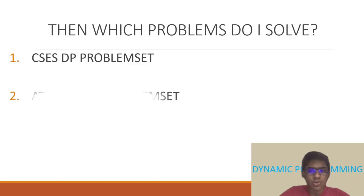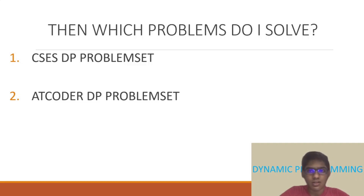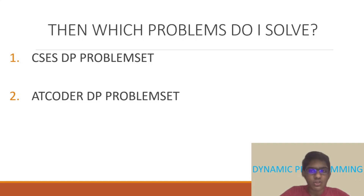Secondly, you should check out AtCoder's DP problem set, which contains 26 problems labeled A to Z. It is basically the A to Z of DP because it starts from Fibonacci numbers, which is the most basic DP concept, right up to the convex hull trick, which is one of the more advanced DP concepts.